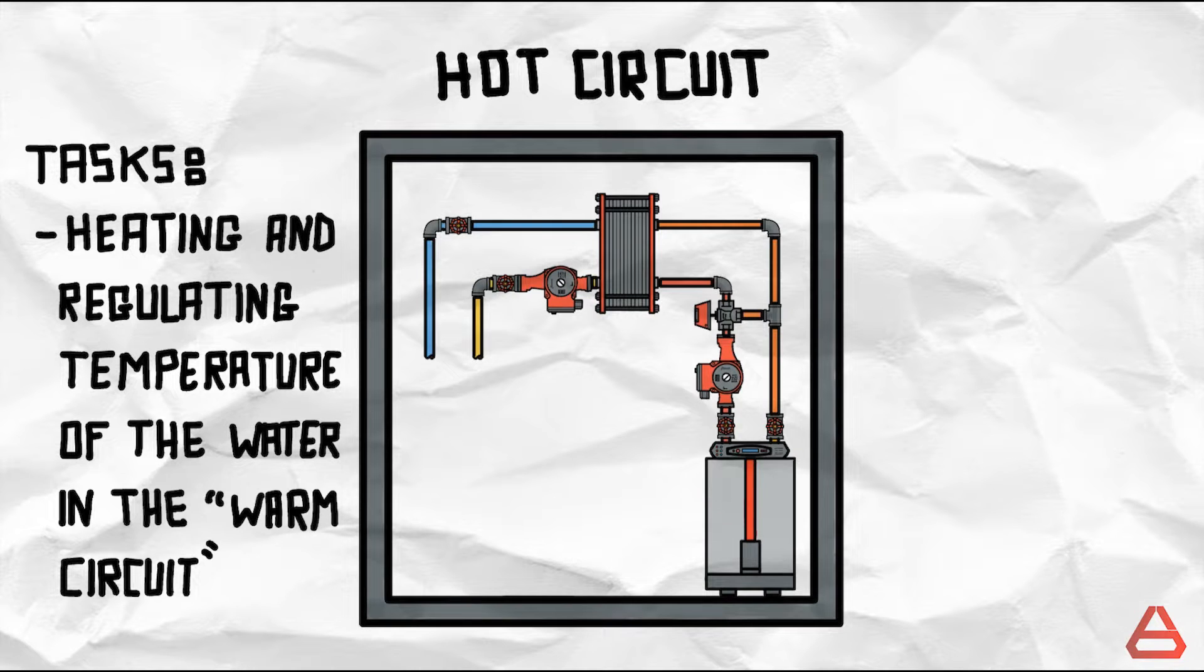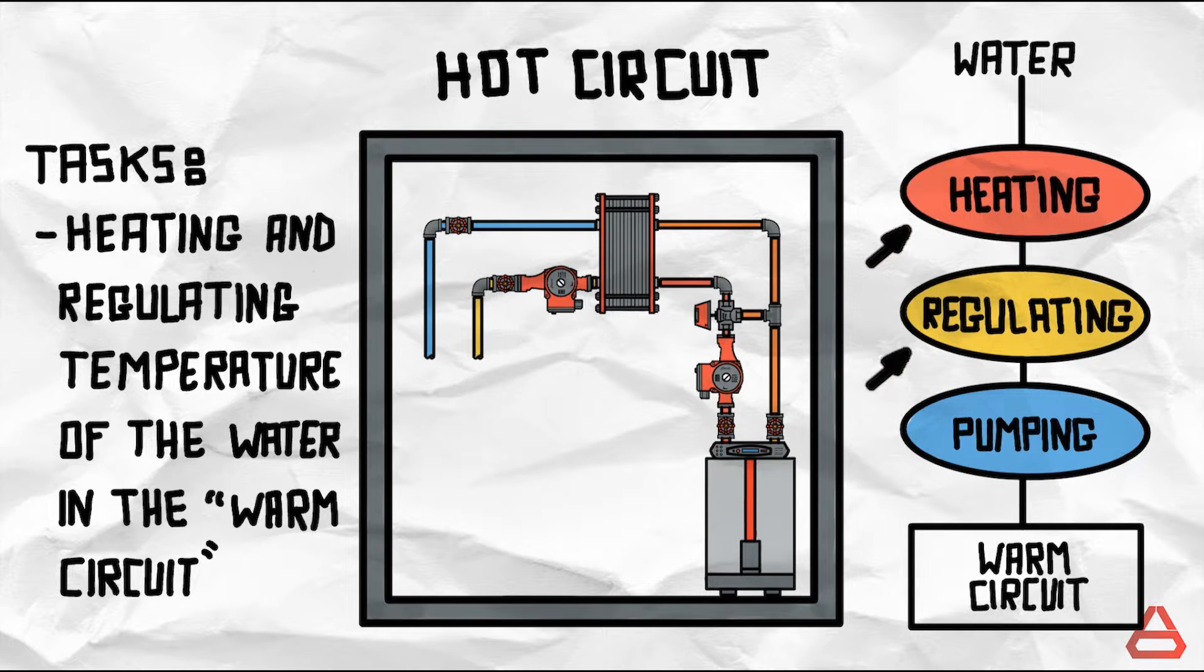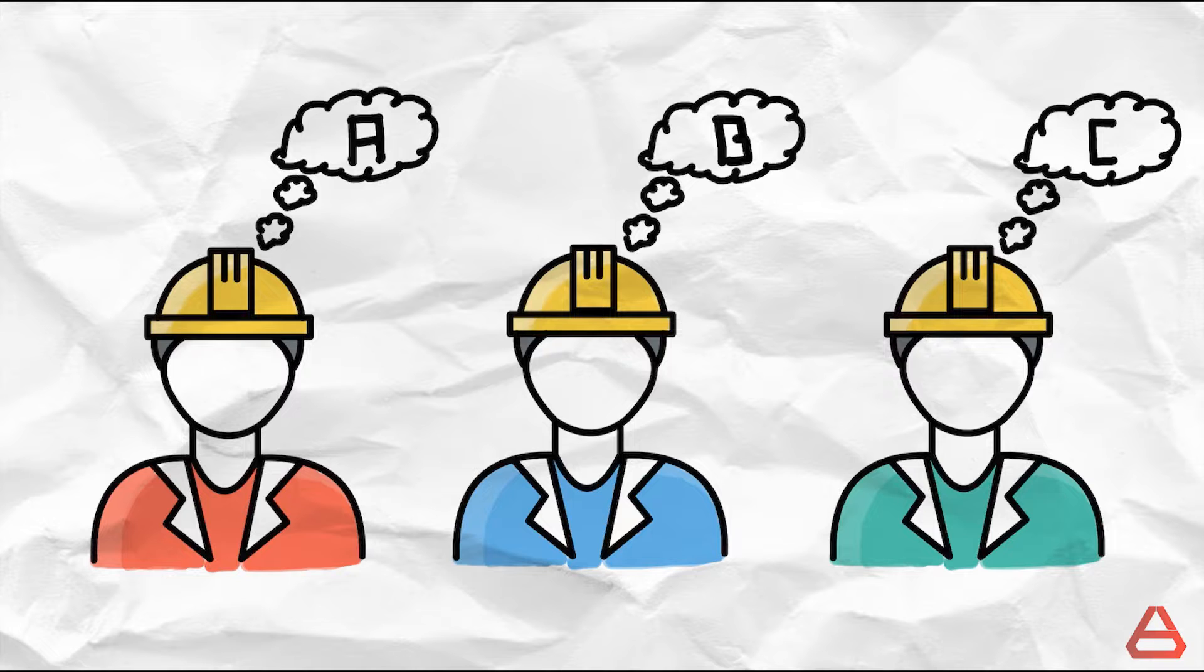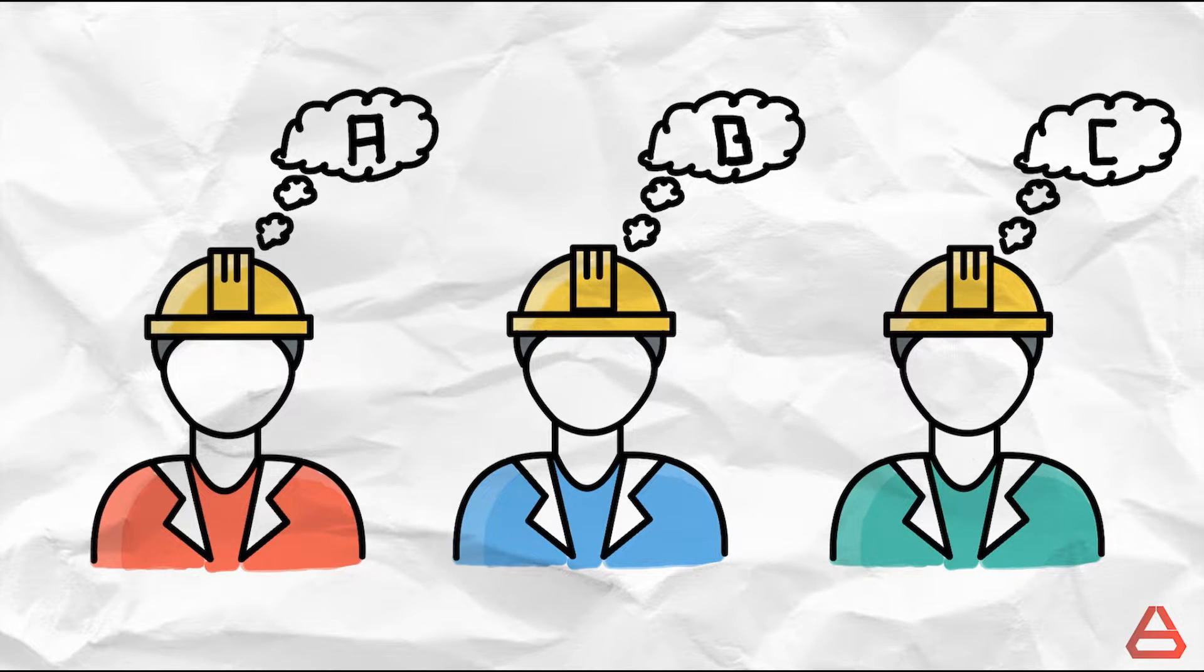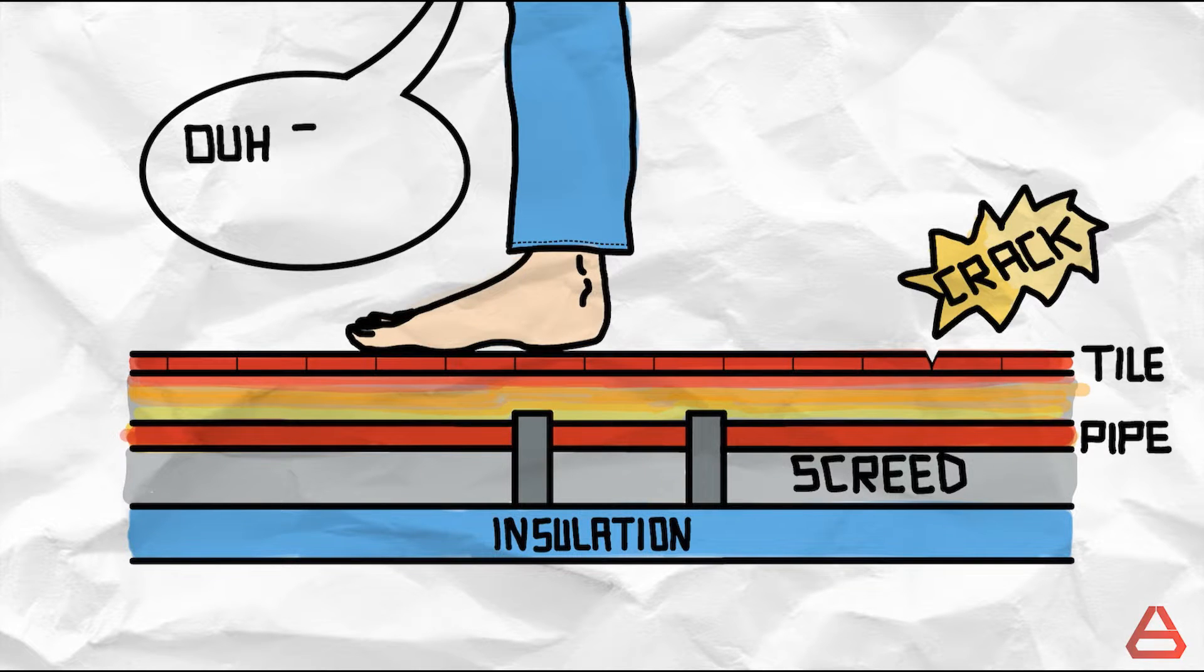Now let's move on to the second part which I refer to as the hot circuit. It is actually what heats, regulates and pumps the water in the warm circuit. It can vary between different designers depending on the situation and the preference of the designer. This circuit is present because having high temperature water in the warm circuit will cause damage to the flooring and discomfort, things which we don't want.